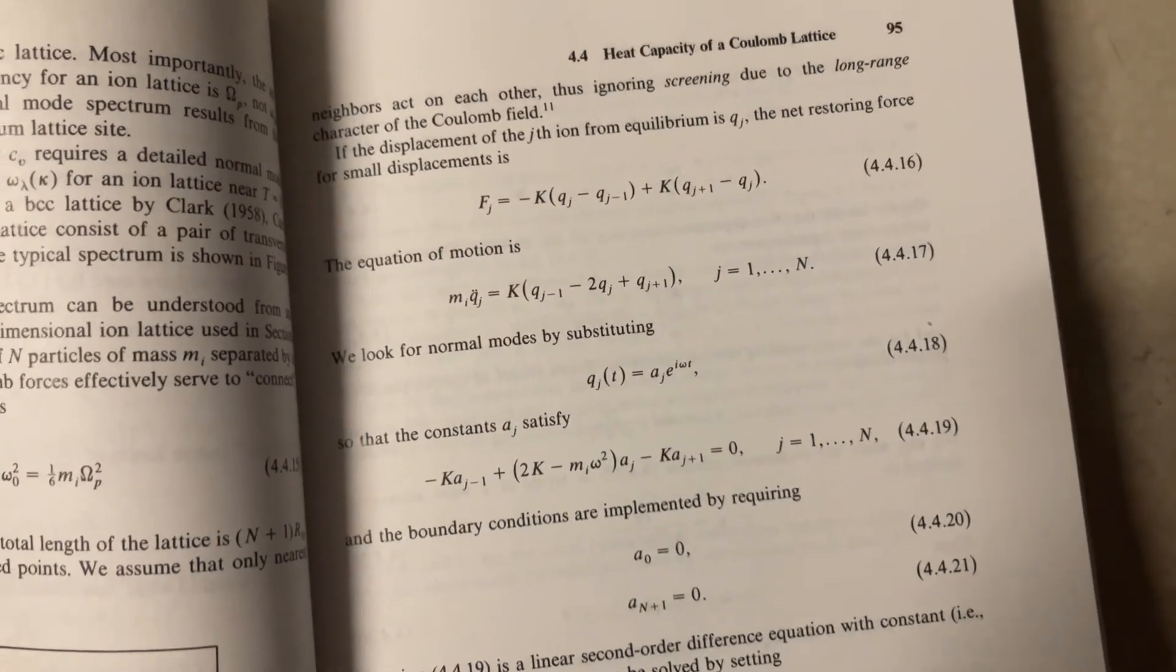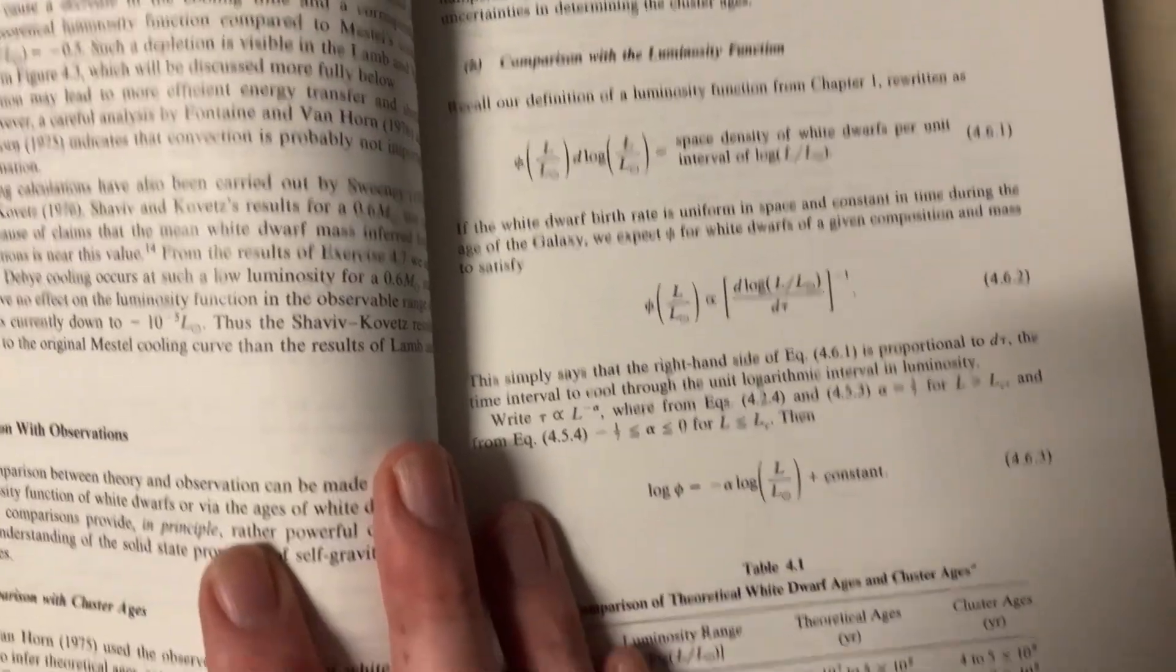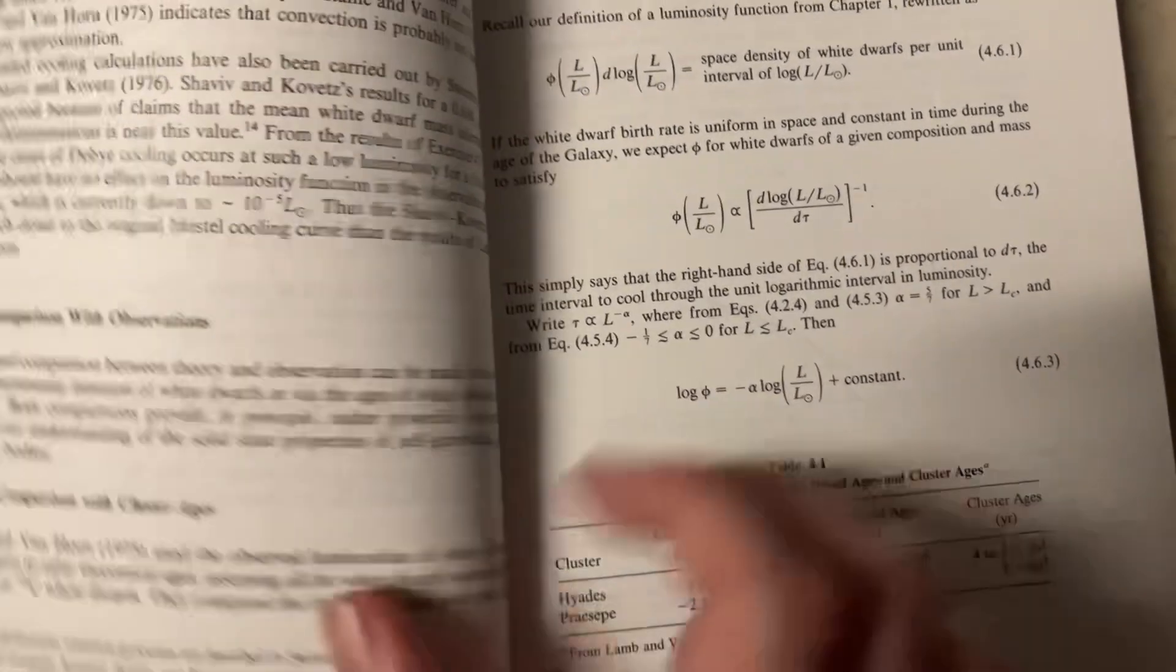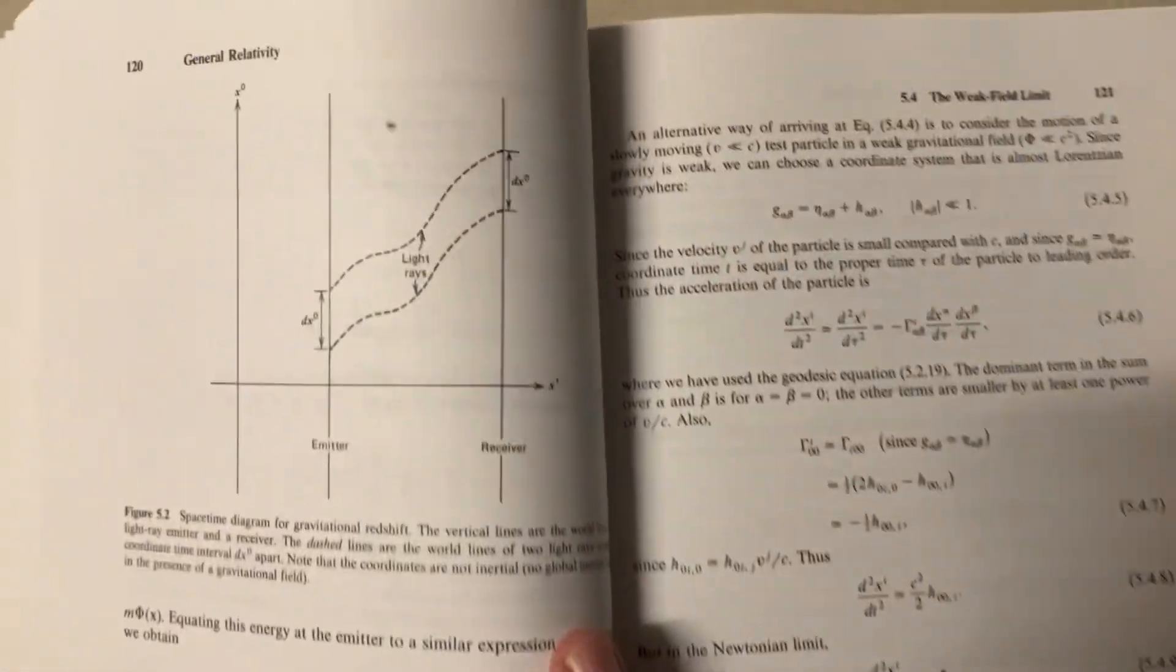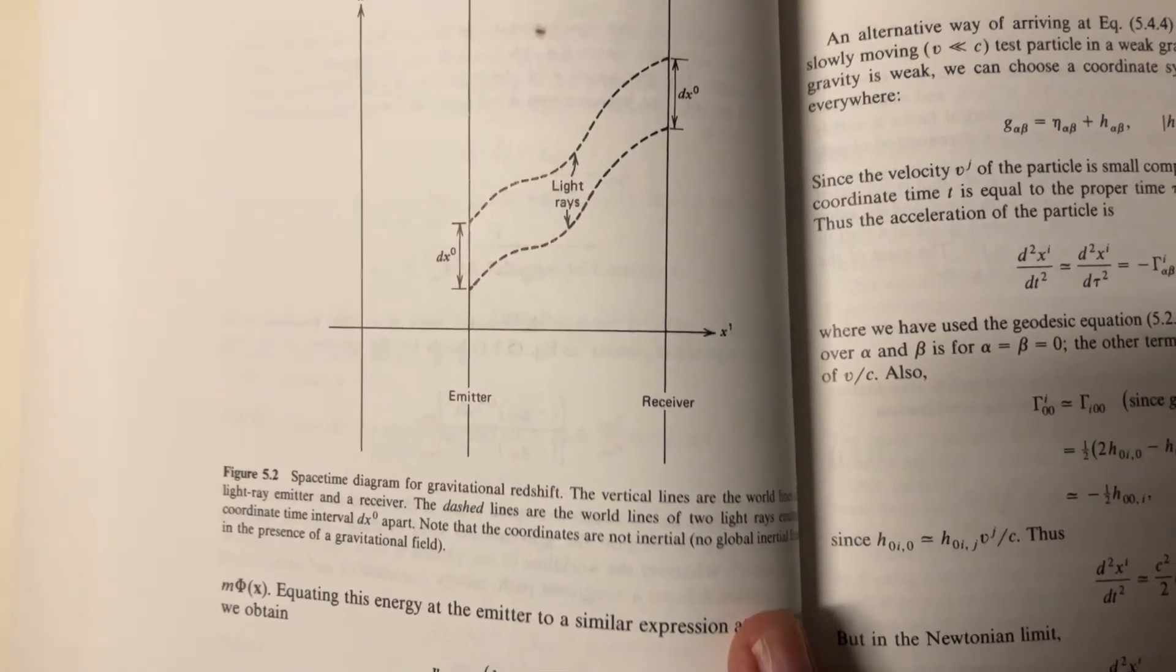The cooling of white dwarfs. Thermal energy. Longitudinal image. Heat capacity of the Coulomb lattice. Some more luminosity stuff. Ages of stars. Light rays here. Emitters and receivers.